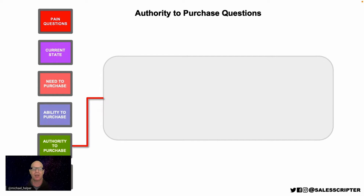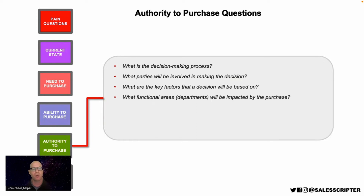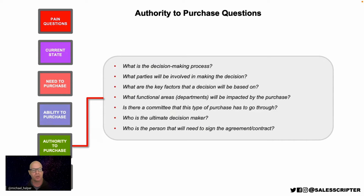A better way is to ask: 'What is the decision-making process?' The prospect may say 'I make the decision,' and you can follow up with 'What happens next?' — and keep asking that to map out the entire decision-making process step by step. You'll most likely be able to identify who the true decision maker is. Additional questions: 'What parties will be involved? What are the key factors the decision will be based on? Is there a committee this purchase has to go through? Who signs the contract?'